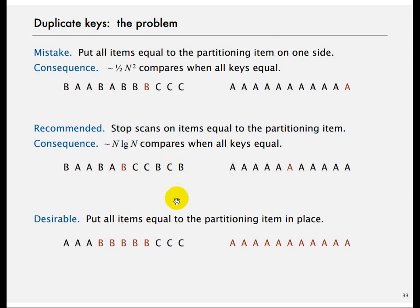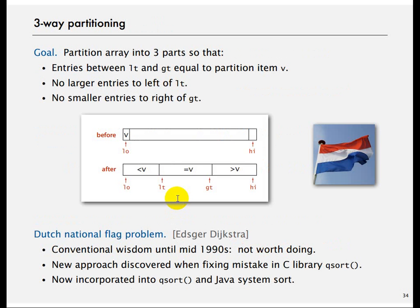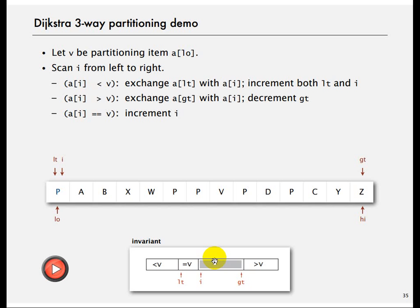The solution is three-way partitioning. Given a pivot V, you divide the array into three parts: elements less than V on the left, elements greater than V on the right, and a middle section where all elements equal V. We will not go over the full implementation here, but this is what eventually helps Quicksort run in N log N time even with duplicates.